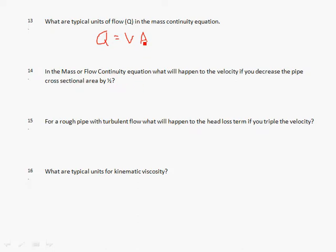Again, Q equals V times A, so if you keep the same, for number fourteen, you keep the same flow rate, and you decrease the area by half, you're going to increase the velocity by two.